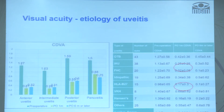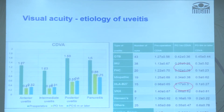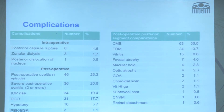Looking at improvement by uveitis type, the greatest improvement was seen in anterior uveitis; posterior and pan uveitis had less satisfactory outcomes. Among individual entities, Fuchs and HLA-B27 had good outcomes, while VKH and pan uveitis had worse outcomes. Intraoperative complications were limited, with posterior capsule rupture in 4.6% of cases. CME was the most common postoperative complication at 36%, ERM formation occurred in 13.7% of patients, and other posterior segment complications were also noted.